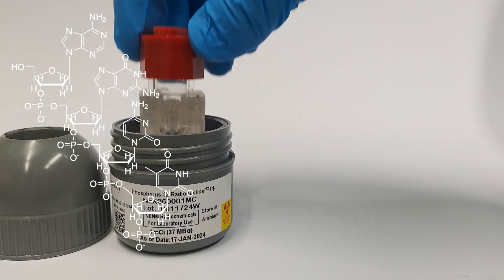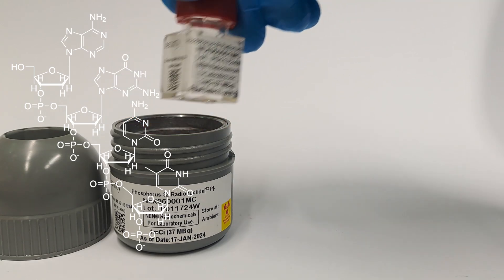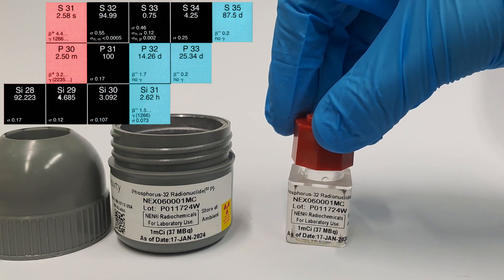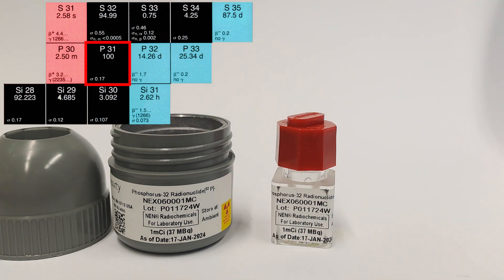Phosphorus is generally present everywhere in living organisms since it's part of the DNA's sugar phosphate backbone. Phosphorus in nature exists exclusively as stable phosphorus-31.